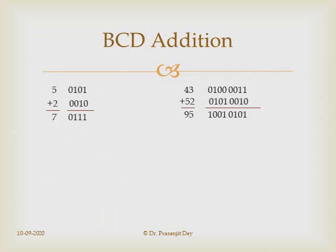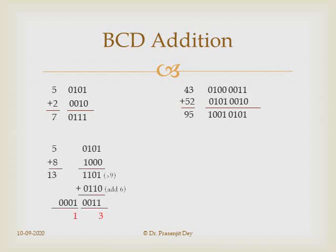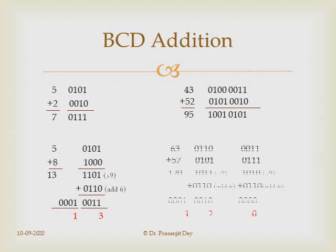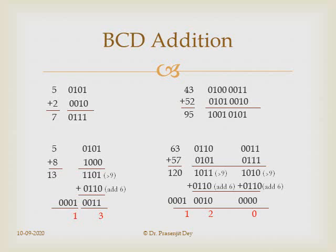For BCD addition, 5+2 = 7 works normally. However, if we add 5+8 = 13, and 13 is not a valid BCD number since BCD only represents 0–9. Whenever an invalid number results from BCD addition, we add 6 to it to get the correct decimal output. For example, 5+8 = 13 in binary BCD, and adding 6 gives 13, the correct decimal result. For multi-digit BCD addition, whenever the result of any digit-group exceeds 9, we add 6 to get the correct arithmetic result.